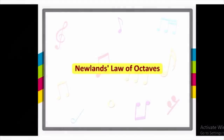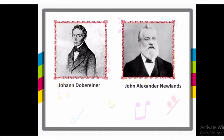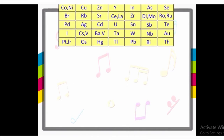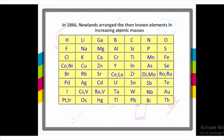Let us discuss Newlands' Law of Octaves. Like Dobereiner, Newlands also correlated the properties of the known elements with their atomic masses. In 1866, he arranged the then-known elements in the order of their increasing atomic masses, starting with hydrogen, which had the least atomic mass, and ending with thorium as the 56th element with the highest atomic mass.